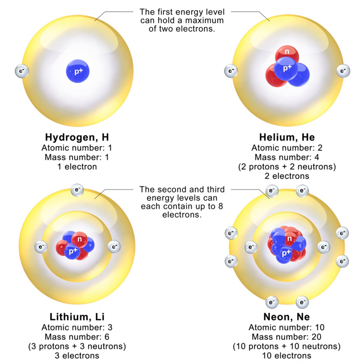The neutron is essential to the production of nuclear power. In the decade after the neutron was discovered by James Chadwick in 1932, neutrons were used to induce many different types of nuclear transmutations. With the discovery of nuclear fission in 1938, it was quickly realized that if a fission event produced neutrons, each of these neutrons might cause further fission events in a cascade known as a nuclear chain reaction.